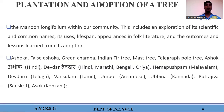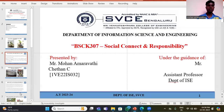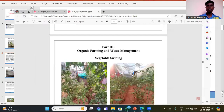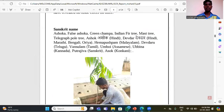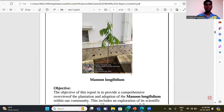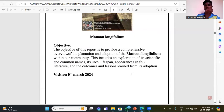Common names include Ashoka Falls, Ashoka Green, Champa, Indian Fire Tree, Devadhar. In Hindi and Kannada it is known as Binnatari. The objective covers the tree's lifespan, appearance, folk literature, and common outcomes and lessons learned from its adoption.